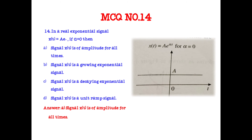In a real exponential signal x(t) = A·e^(αt), if α = 0, then the signal will be constant — the same amplitude for all time periods.